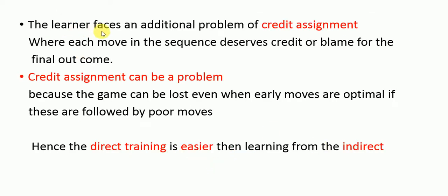With indirect training, the learner faces an additional problem called credit assignment — determining how much credit or blame each move in the sequence deserves for the final outcome. Credit assignment can be problematic because a game can be lost even when early moves are optimal, if they are followed by poor moves. Hence, direct training is easier than indirect training.